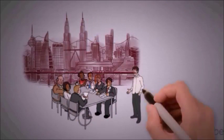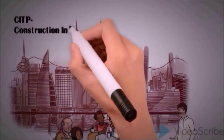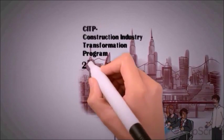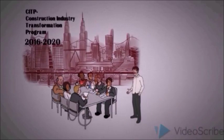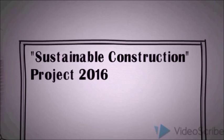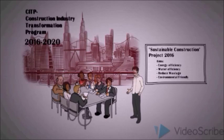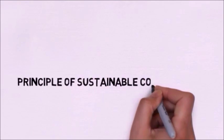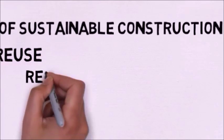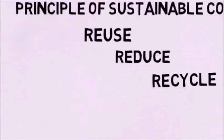In the construction industry transformation program 2016 to 2020, Malaysia's nation aims to transform the construction industry towards becoming environmentally sustainable. The principle of sustainable construction includes reuse, reduce, and recycle of resources to give protection to the environment and nature.